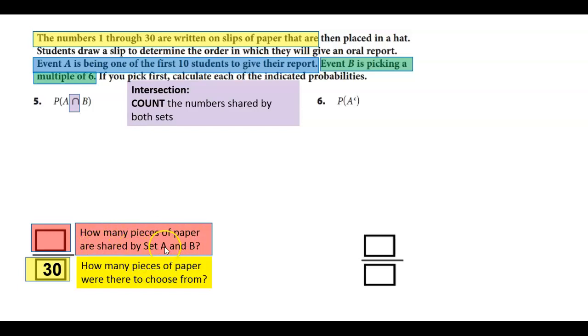Thirty. How many pieces of paper are shared by set A and B? So it might be a good idea to actually write down. Okay, set A is essentially 1, 2, 3, 4, 5, 6, 7, 8, 9, 10, the first ten numbers, whereas B is picking multiples of six. So there's 6 times 1, and 6 times 2, 6 times 3, 6 times 4, 6 times 5. And why am I stopping here? Why am I not continuing? Because 30 is the largest number we can choose. And what do they share?